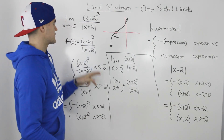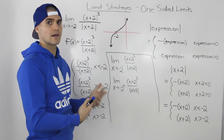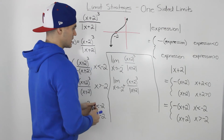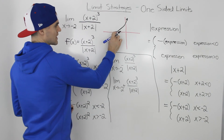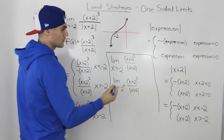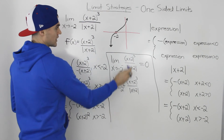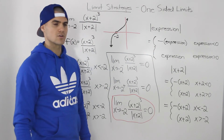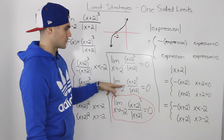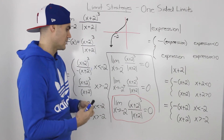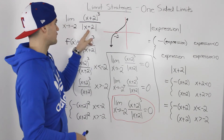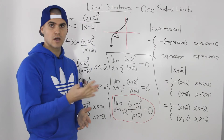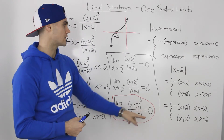Now let's figure out the limit as x approaches negative 2 from both the left and right sides. As we approach negative 2 from the left, we're approaching a y value of 0, so the left-sided limit equals 0. As we approach negative 2 from the right, it's also approaching a y value of 0. Since both one-sided limits approach the same y value of 0, the general limit as x approaches negative 2 is equal to 0.